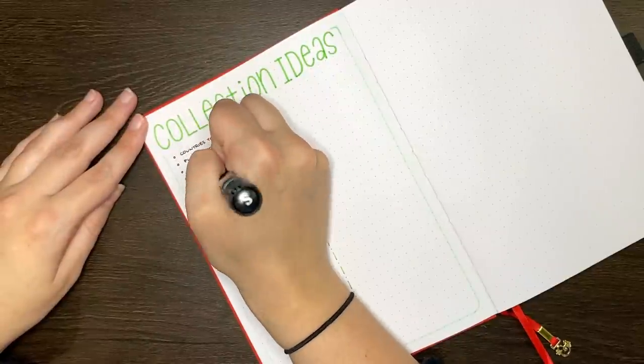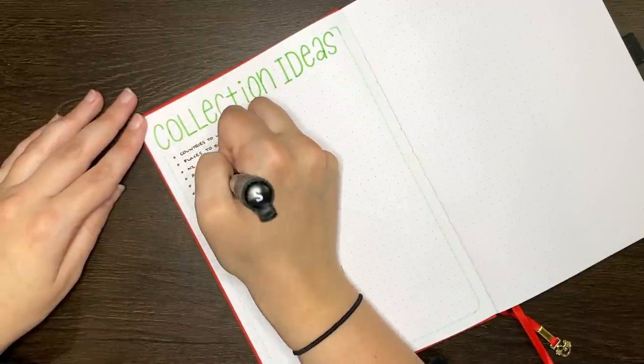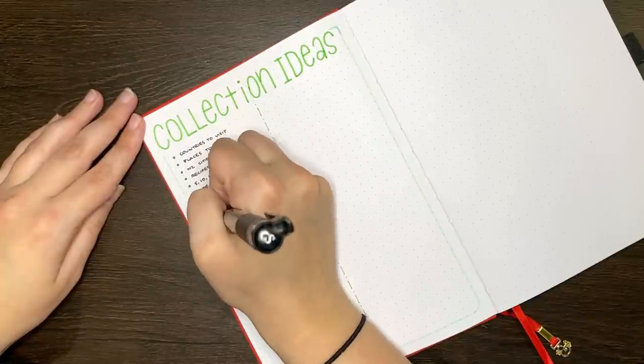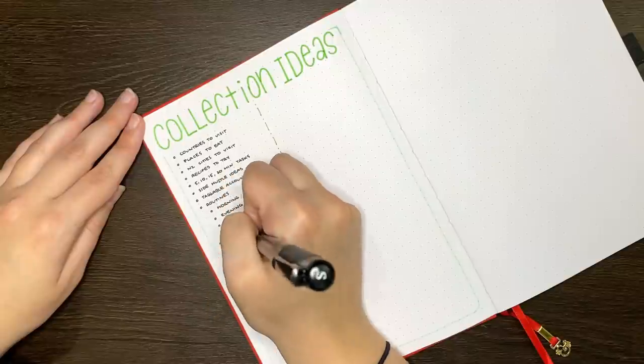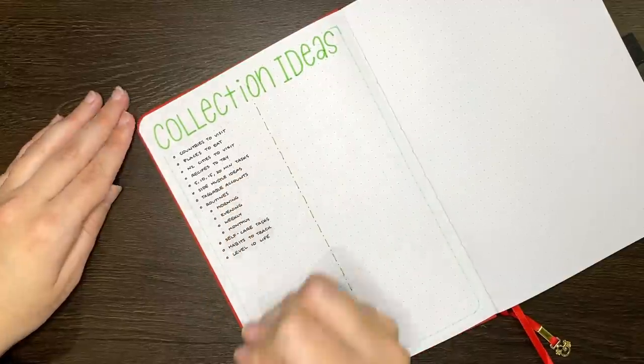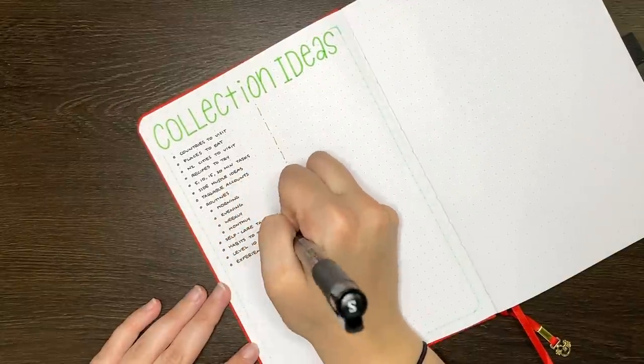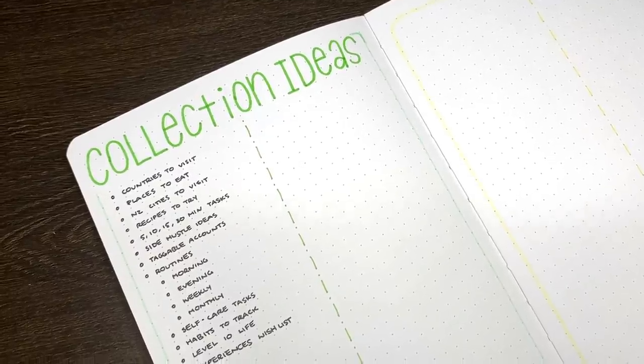While in my last collections Bujo, I had this over a full spread, I felt that I only really needed one page for it this time. You can see I also transferred some of the ideas that I had in my last journal over into this one too. The majority of the rest of the spreads that I set up in this video though, I have populated off camera.